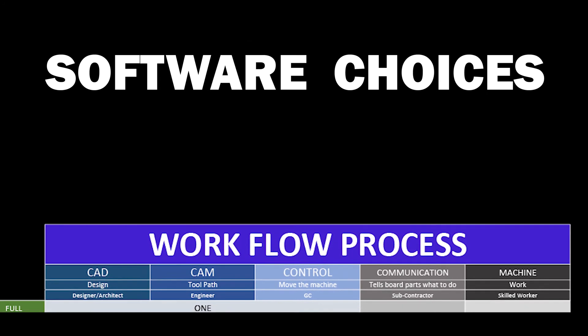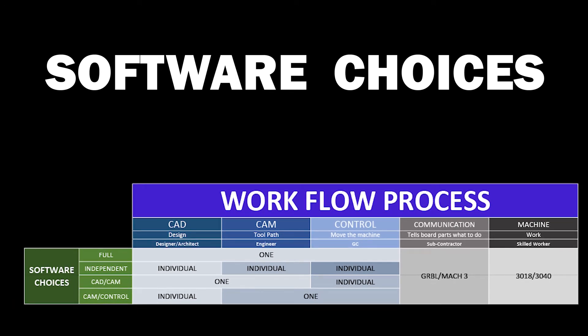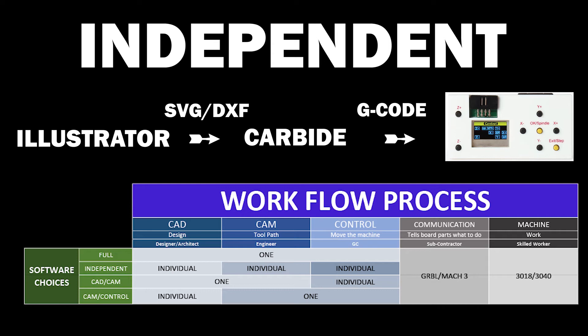Last we have the machine itself — it could be a 3018, 3040, whatever. This is again for hobby CNC machines. That brings us to software choices, and there's lots of software out there. You're going to want to pick what's best for you. There are full integrated CAD/CAM and CAM/Control setups. If you're doing something simple and just want one program, or you have artwork from somewhere else, you can use a full solution like Easel that gives you CAD, CAM, and control functions, though the CAD part is more simplistic.